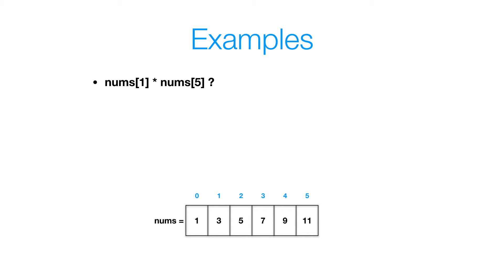Here's another example. I want you guys to do this again. Pause the video, and then when you're ready, press play, and we'll go over the solution. So here's the solution. Nums of one, we get that value of three. Nums of five gives us that value of 11. And so nums of one multiplied by nums of five, which is three multiplied by 11, is going to give us that value of 33.